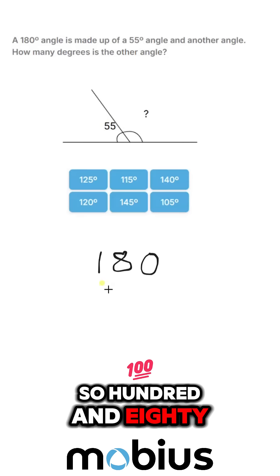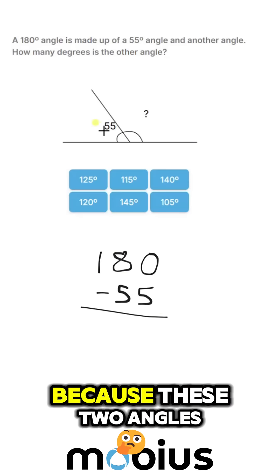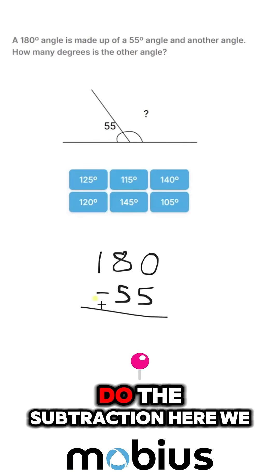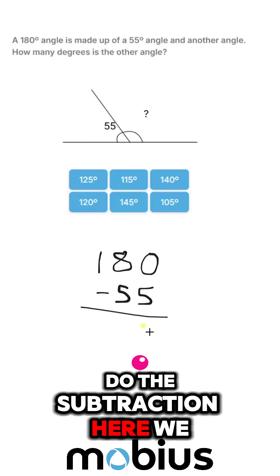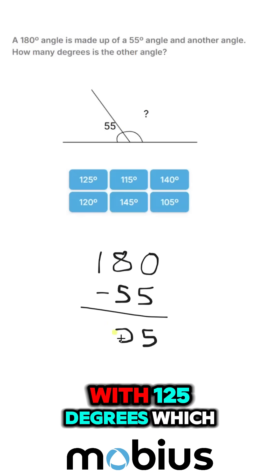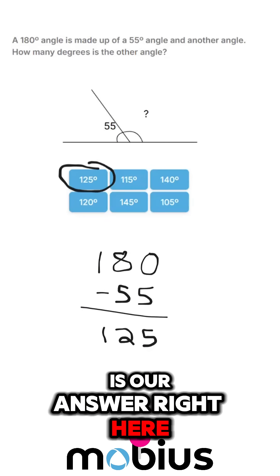So 180 minus 55 is going to be our mystery angle because these two angles need to add up to 180. So if we just do the subtraction here, we end up with 125 degrees, which is our answer right here.